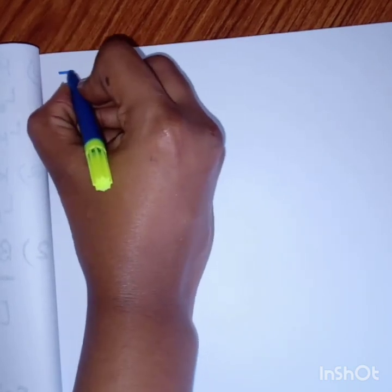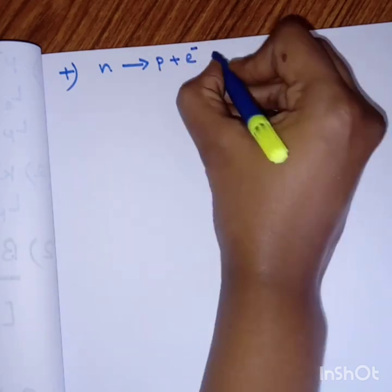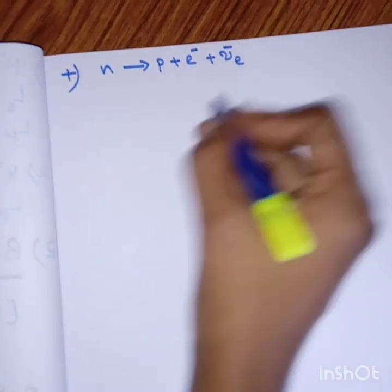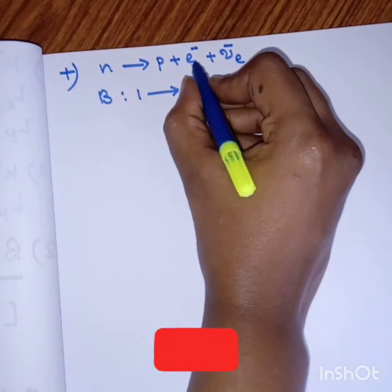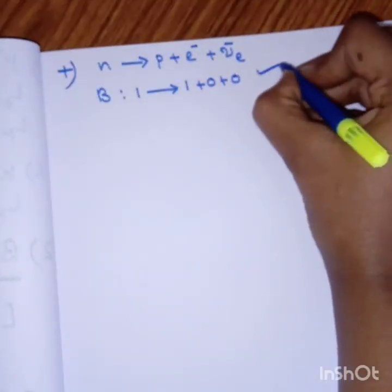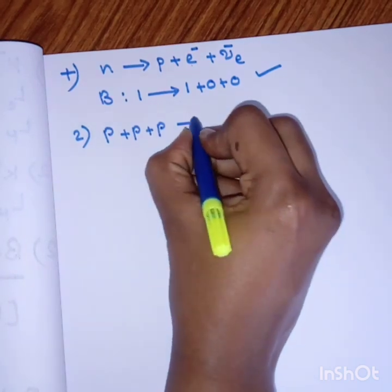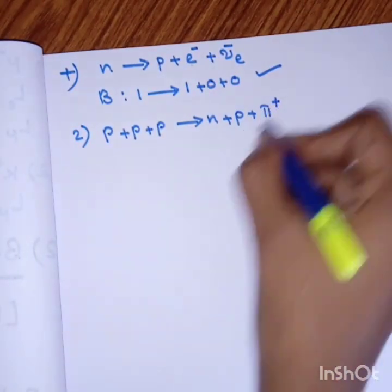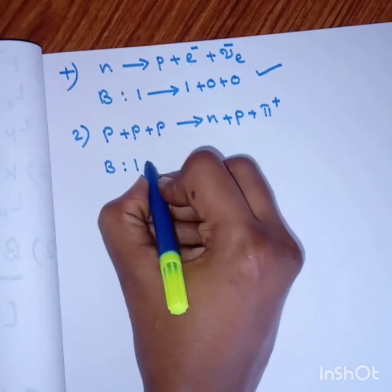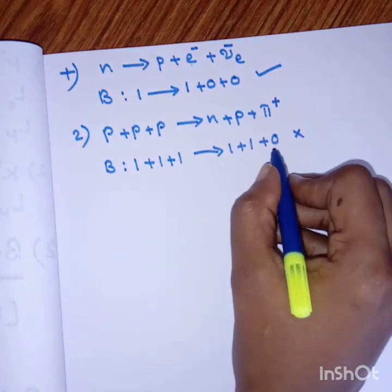Now let's do some problems. First: neutron splits into proton, electron, and antineutrino-electron. Baryon number of neutron is 1. On the right side, proton has baryon number 1, electron and antineutrino are not baryons so they have 0 and 0. So 1 equals 1 — this equation is conserved. Next case: three protons split into one neutron, one proton, and a pi meson. Baryon number: 1+1+1 = 3 on the left, but 1+1+0 = 2 on the right. The reaction is not allowed because baryon number is not conserved.